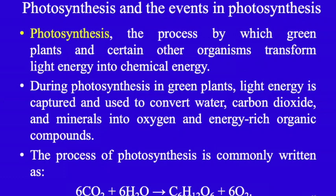Chemosynthesis is a process in which some organisms use chemical energy instead of light energy to produce food. Photosynthesis is the process by which green plants and certain other organisms transform light energy into chemical energy. During photosynthesis in green plants, light energy is captured and used to convert water, carbon dioxide, and minerals into oxygen and energy-rich organic compounds. The process of photosynthesis is commonly written as: CO2 + H2O → C6H12O6 + O2.